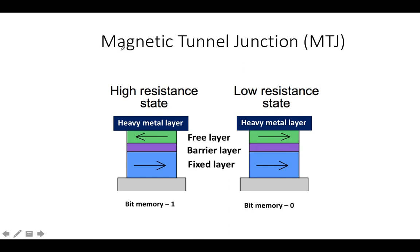As we know, memory works in binary form — like one or zero — and the same principle is used for MRAM as well, in which one state is zero and another is one. In MRAM, the memory state is defined by the difference in resistance between the bits. The basic unit, or a bit, in MRAM is one tiny MTJ, or Magnetic Tunnel Junction.